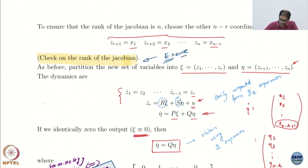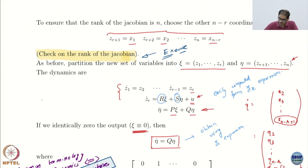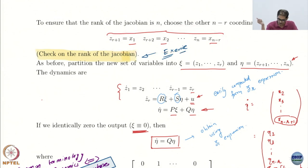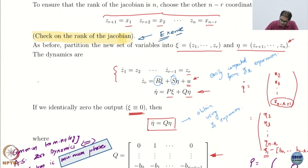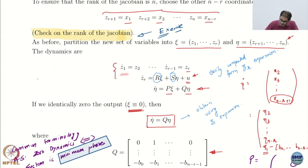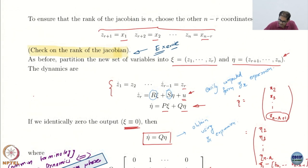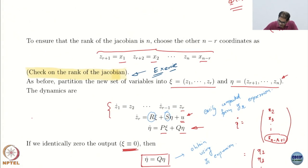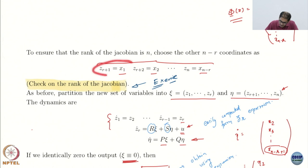So now what? This additional dynamics is what will give me the zero dynamics. The Z1 to Zr form the psi, and the etas are these remaining coordinates.